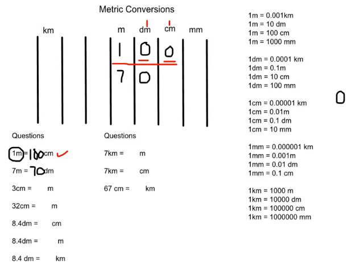Now that we've gone from a larger unit to a smaller unit, we're going to go the other way — from a smaller unit to a larger one: 3 centimeters to meters. It's going to be the same process. We find the centimeters column and put 3 in there. This time we're moving left in our chart to get to a bigger unit, and we're going to do the same thing by filling in zeros — except we're going the other way.